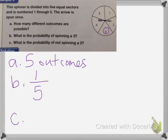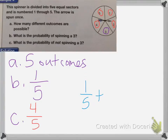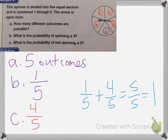C is asking what is the probability of not spinning a three — the opposite. There's only one three, which means there are four numbers that are not three. So that's four out of five. Notice that one-fifth plus four-fifths equals five-fifths, or one. That's important because I will either be spinning three or not spinning three — there's no other option, so it has to equal one.